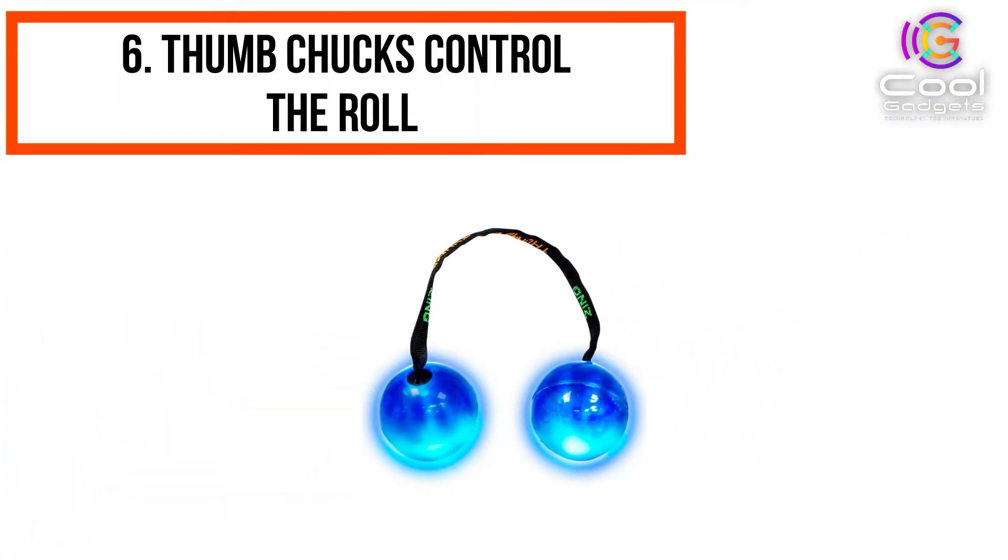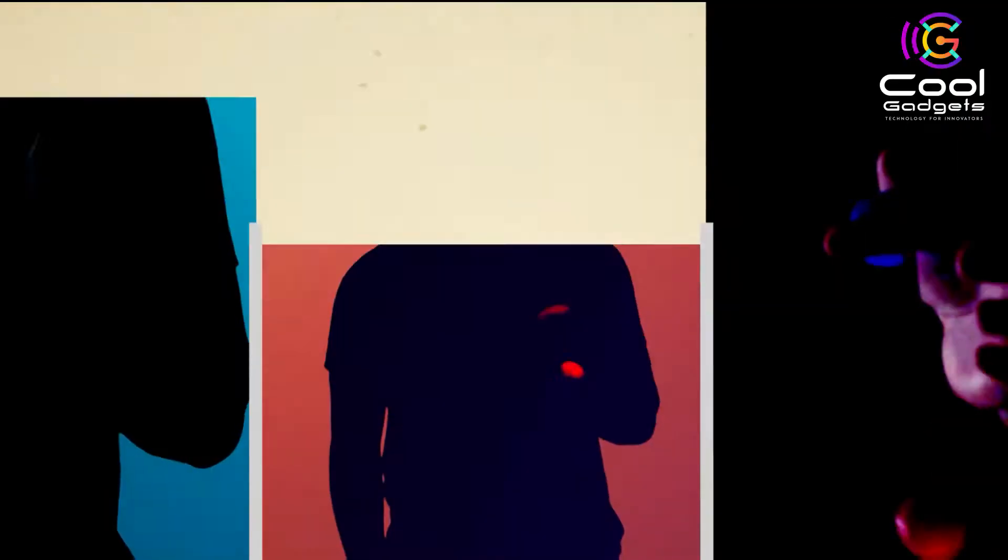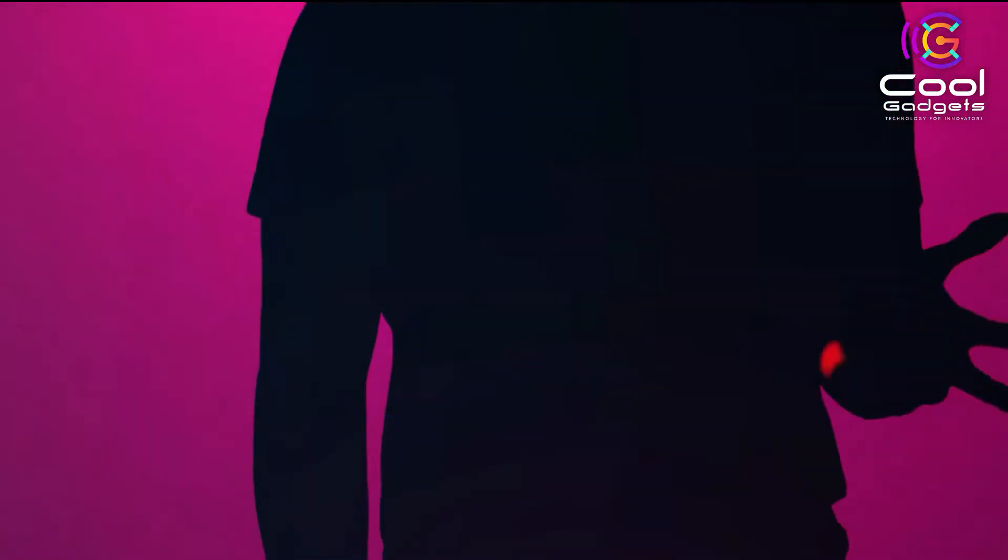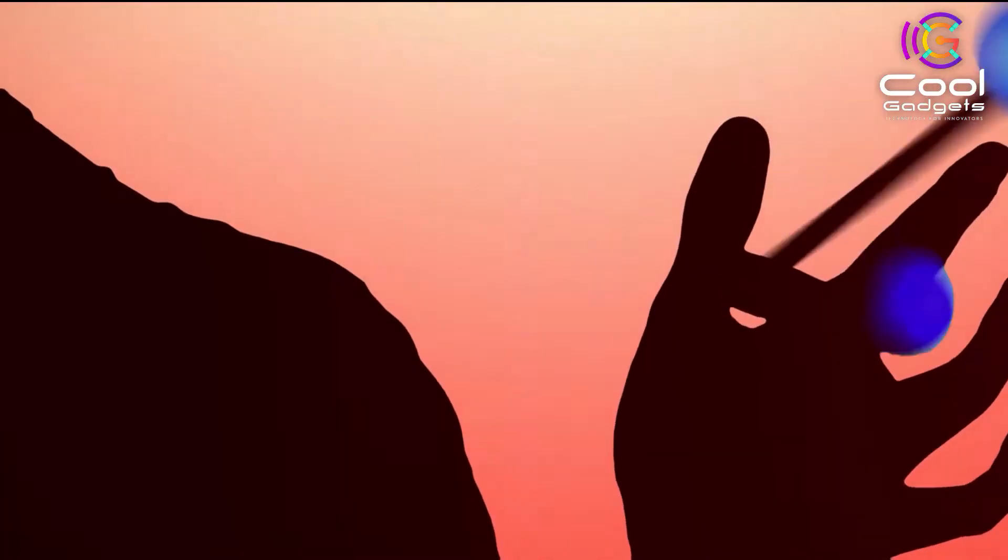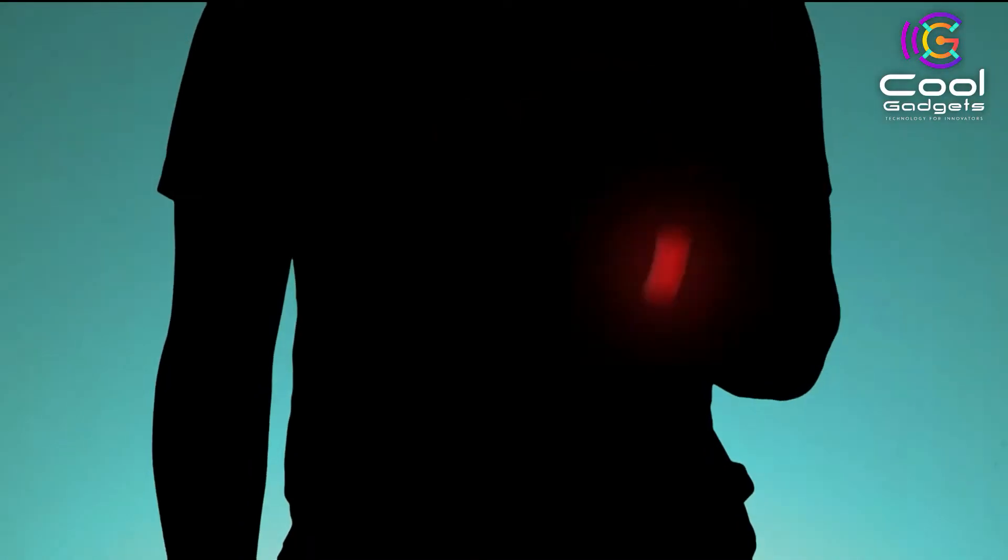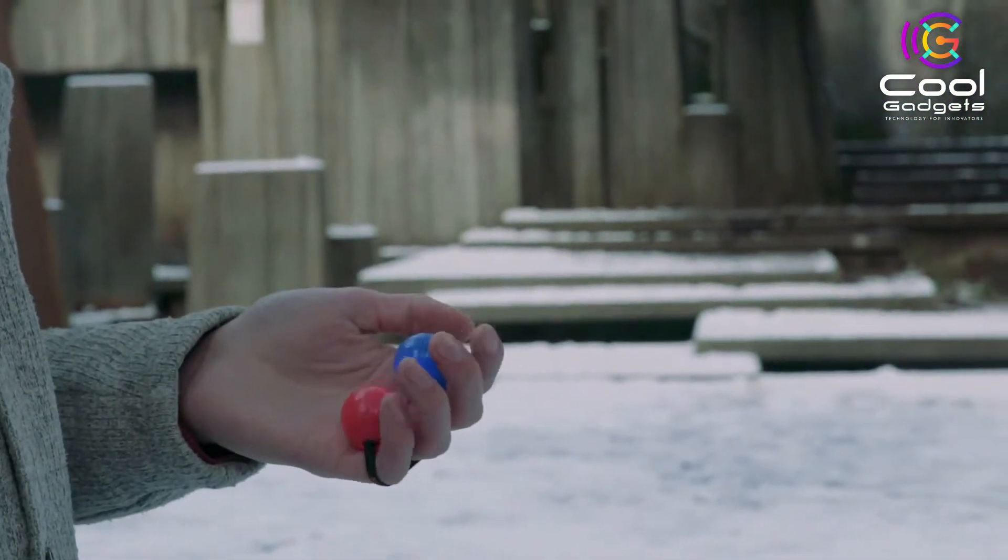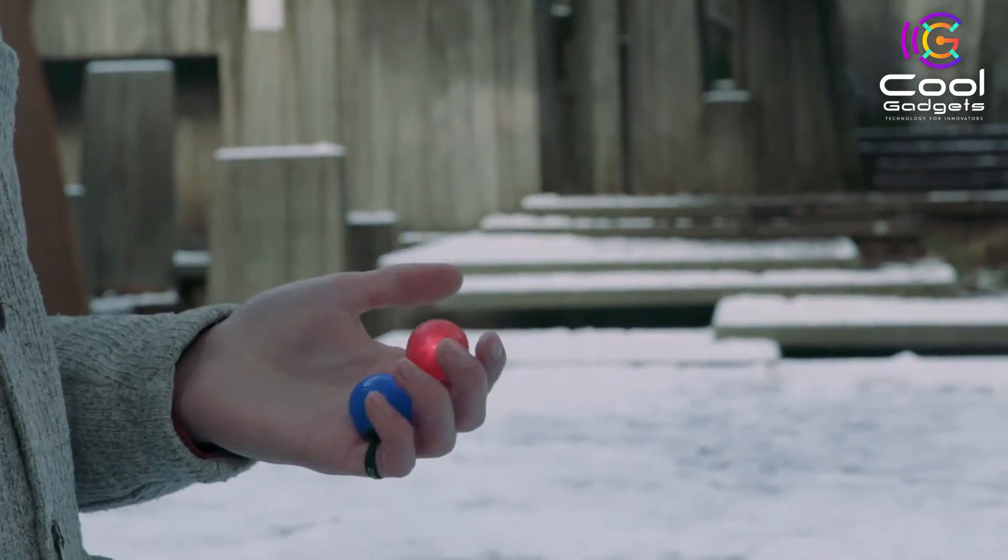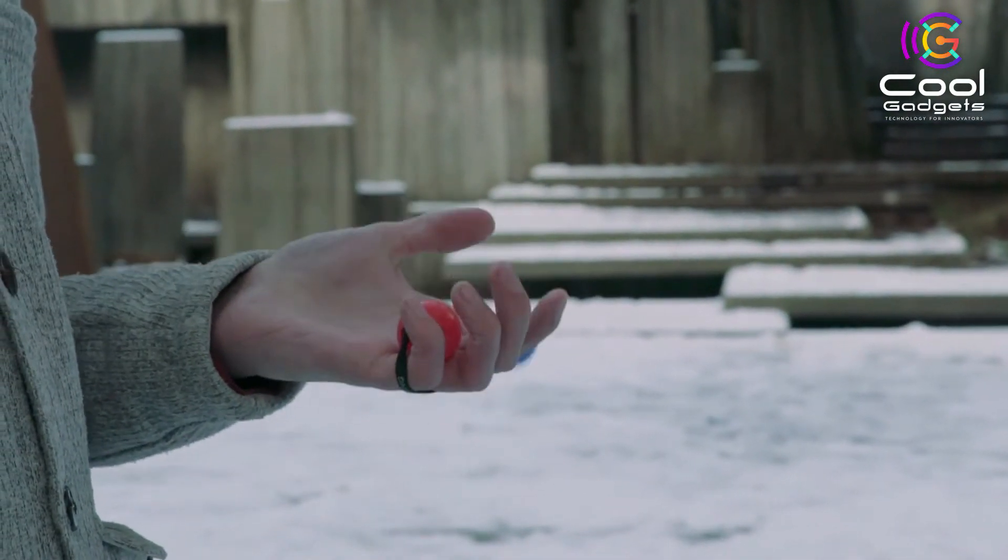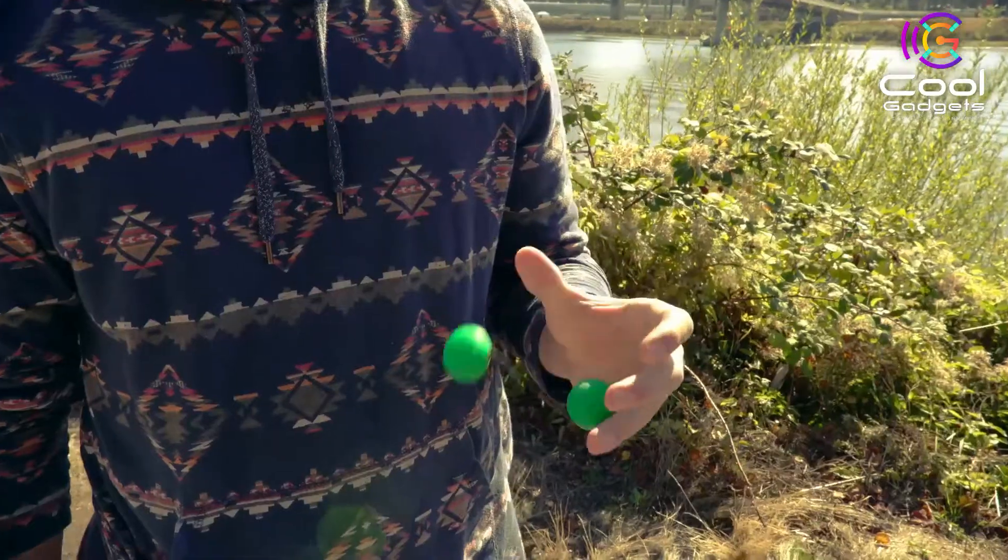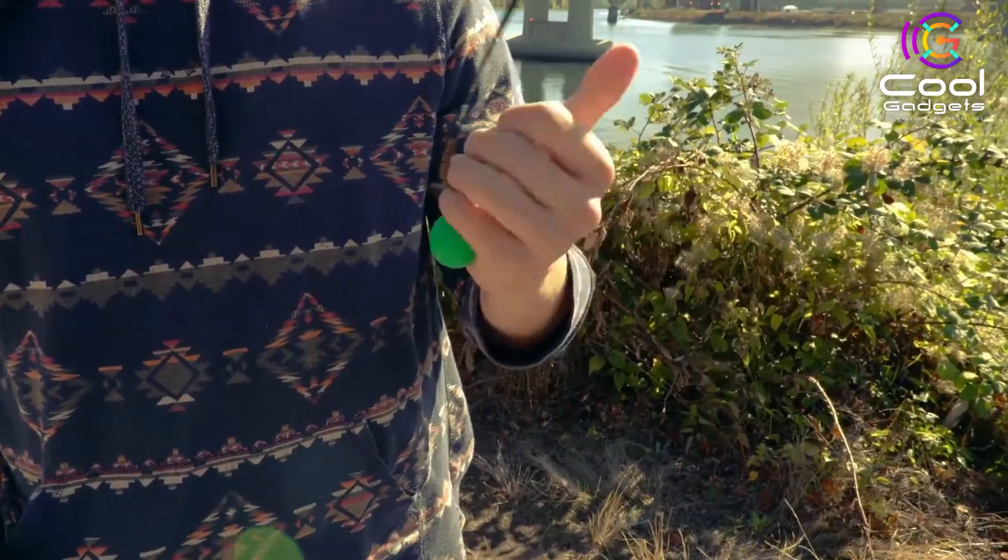Number 6: Thumb Chucks Control the Roll. Inspired by baguetry, Zing Toys Thumb Chucks is a new, pocket-sized skill toy that kids ages five and up can flip and twirl around their fingers to perform jaw-dropping tricks. Thumb Chucks look relatively elementary, but that doesn't mean they don't have a lot to offer. Essentially two balls connected by a six-inch string, Thumb Chucks offer unique, hands-on play that will help kids pass the time and eventually impress their friends with some sweet moves.